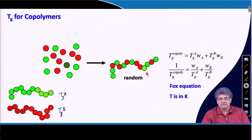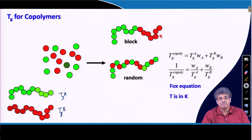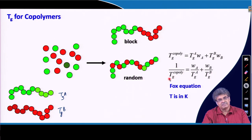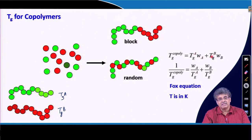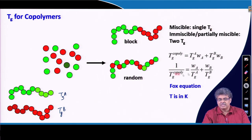This is about random copolymers. If I have a block copolymer, then the Tg depends on the miscibility behavior of the two blocks. If the two blocks are completely miscible with each other, then the resulting Tg will be obtained by this expression as well. If they are completely immiscible, then we will have two Tg's — one corresponding to each block, Tg_A and Tg_B. So, if miscible: single Tg from these expressions; if immiscible or partially miscible: two Tg's.